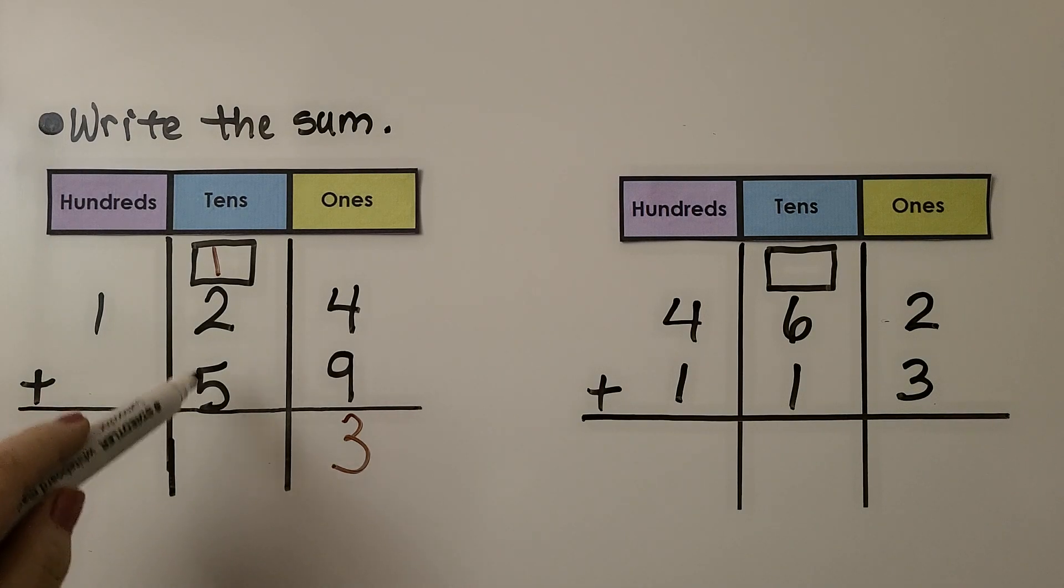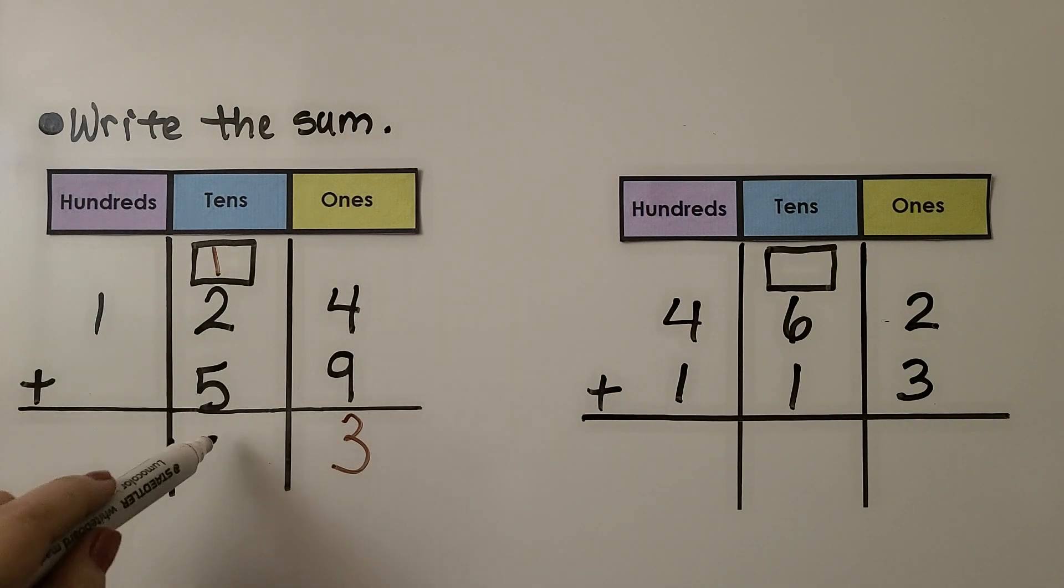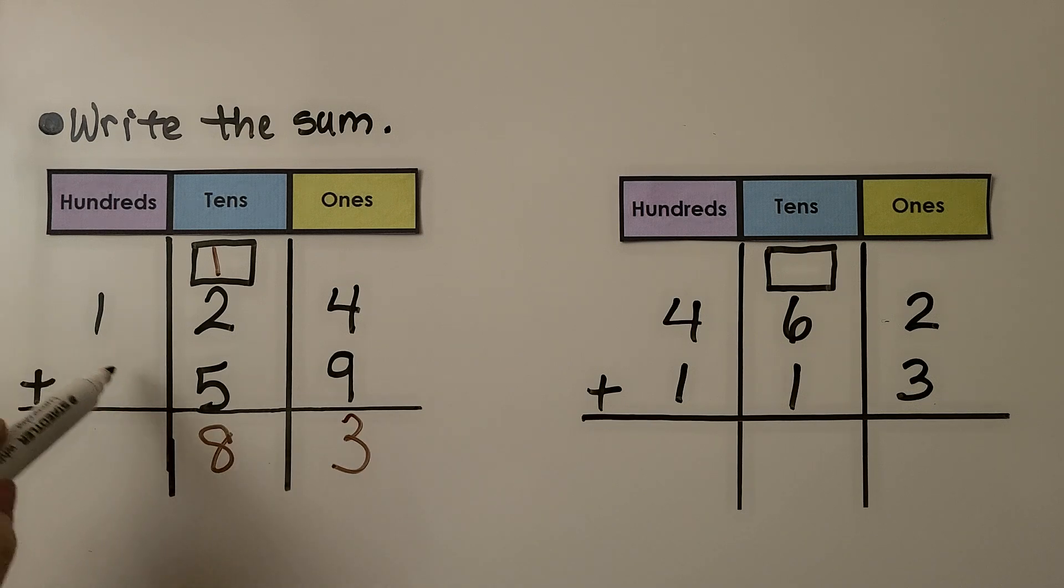We regroup a ten to the tens place and write the three in the ones place. Now we have five, six, seven, eight. And we don't have any hundreds here. We only have 100 here. So we just drop it down. It's equal to 183. So we had to regroup ten ones as a ten for this problem.